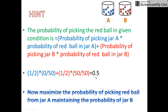Now you must think to maximize the probability of picking red balls from jar A while maintaining the probability of jar B — that is, to keep the probability of selecting a red ball from jar B equal to 1.